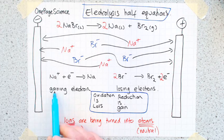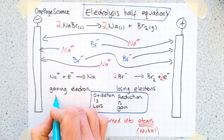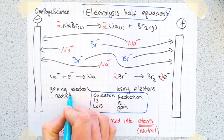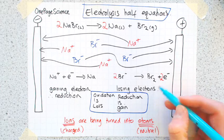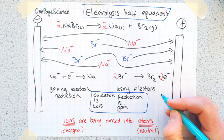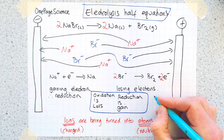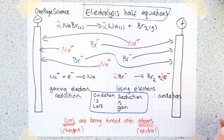So on this side, we're gaining electrons, so this side therefore is reduction. On this side, the bromide has lost some electrons, so this side is oxidation.